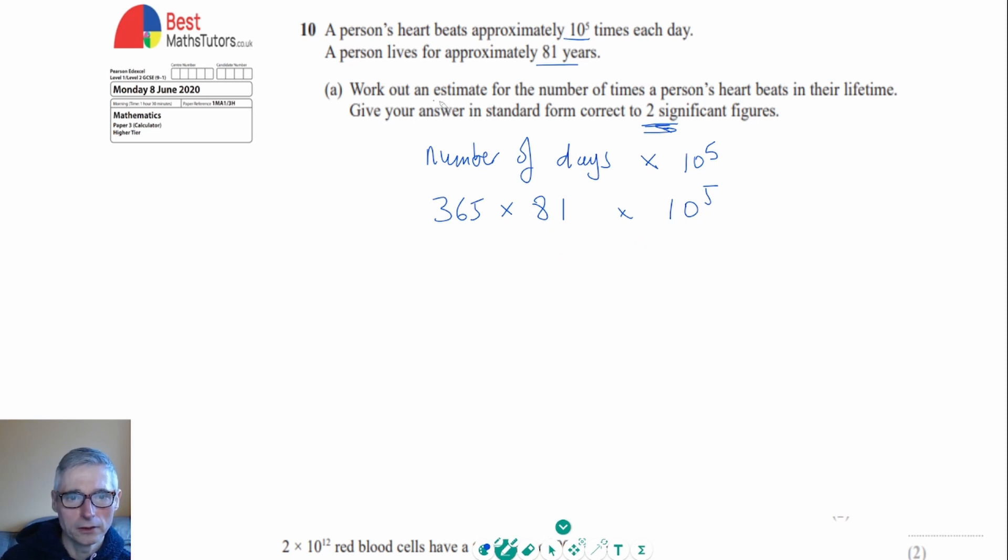Now because we're doing an estimate, what we want to do is round these numbers. We can take the 365 and do that to one significant figure, and if we do that it will become 400, because the 6 in the second significant figure place means that the 3 is going to have to have one added to it. And then if we take the 81, that to one significant figure becomes 80, because the 1 is below 5 so we don't have to put the 8 up to a 9. This is still times 10 to the 5.